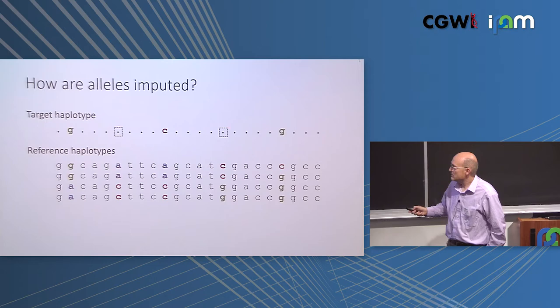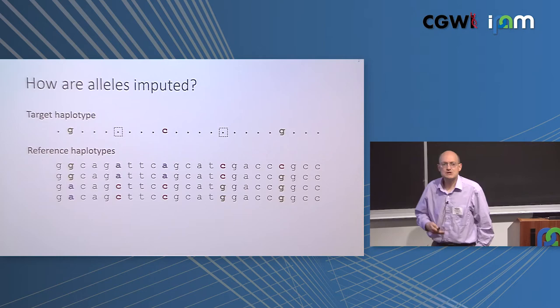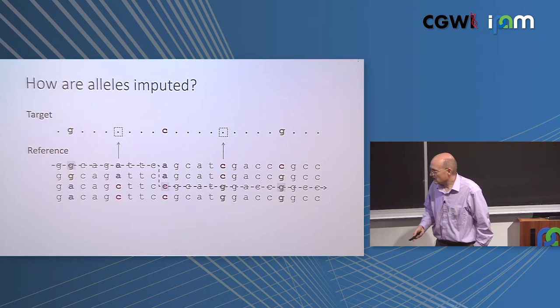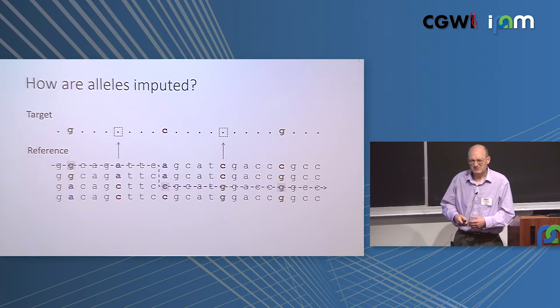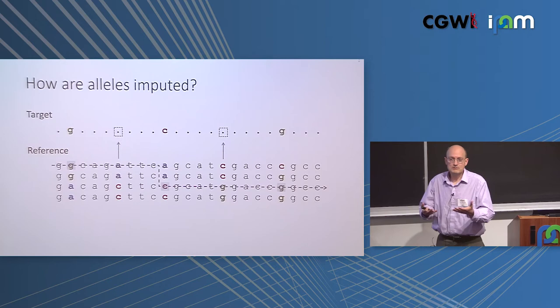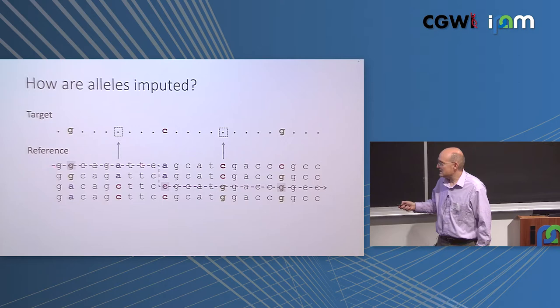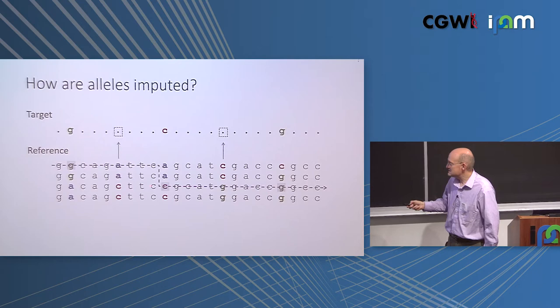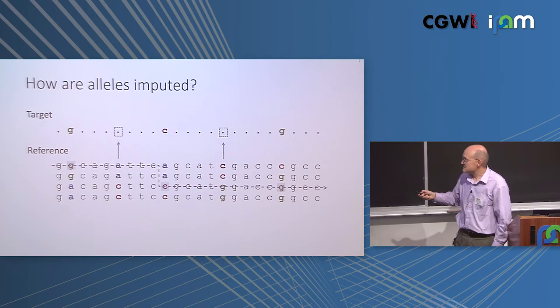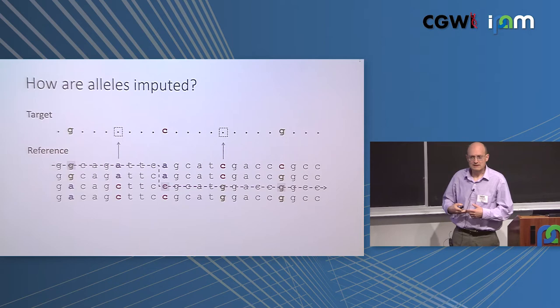We assume the target haplotype is copying segments of the reference haplotypes, represented by a path. Here, the target haplotype copies the first reference haplotype, then switches and copies the third. Copying reflects identity by descent — the target and reference have both inherited a segment of DNA intact from a common ancestor. When it switches, a different stretch of DNA was inherited intact from another common ancestor. If we can estimate which segments are inherited identically by descent, imputation becomes easy — we'd impute the alleles accordingly.